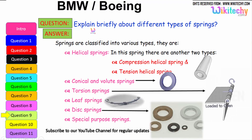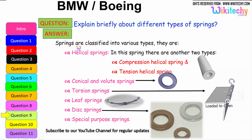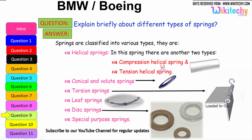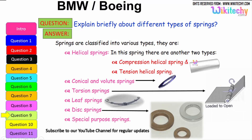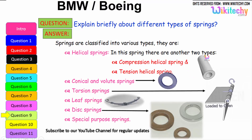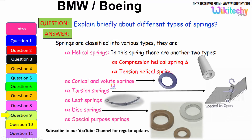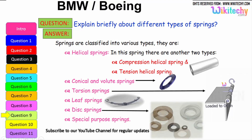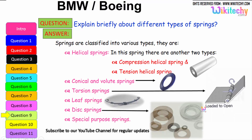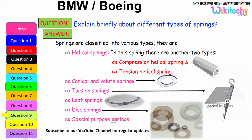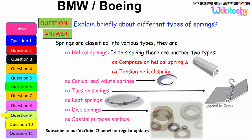The different types of springs: springs are classified into various types. First are helical springs, which have two sub-types — compression helical springs and tension helical springs. Next are conical/volute springs, followed by torsion springs, leaf springs, and disc springs. There are also special purpose springs. These are the different types of springs available.